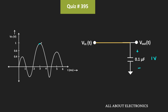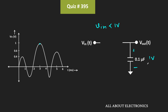Now once again after this peak, since the input voltage is reducing, the voltage at the anode will be less than the cathode, and therefore this diode will act as an open circuit. And after this point, this Vin is always less than 1V. So until the input voltage goes beyond 1V, the voltage across the capacitor will remain 1V. And this capacitor will hold this voltage because there is no path for discharge.